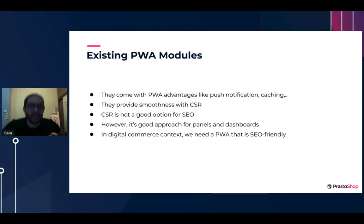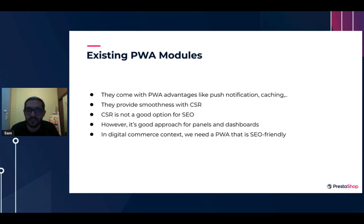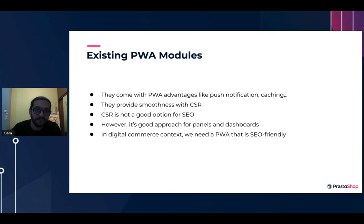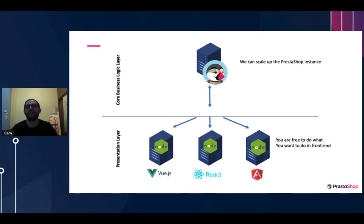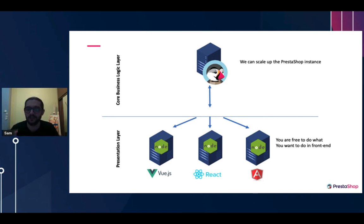There are some existing PWA modules on PrestaShop Addons, but most of them use a CSR (client-side rendering) approach to load pages and provide smoothness. CSR is a good option for panels and dashboards, but in a PrestaShop and e-commerce context we need web pages rendered on a server. The Node.js application communicates with the backend through an API — and through the API you can connect any front-end to the website, completely decoupling the front-end from the backend.